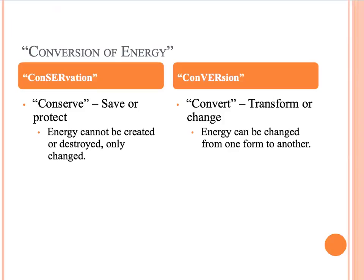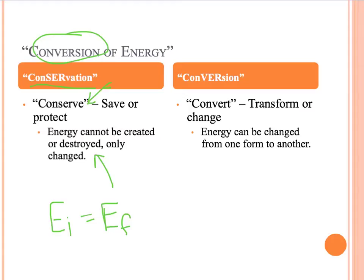This new idea of conversion of energy has words that seem very close to the idea of conservation of energy. We've learned that the root word 'conserve' means to save or to protect, and from this we know that the definition of conservation of energy is that energy cannot be created or destroyed — so the energy initial equals the energy final. But today we want to talk about the other part of the definition, which is that energy can be changed or converted from one form to another. This idea is what we call the conversion of energy, meaning energy can be changed from one form to another.